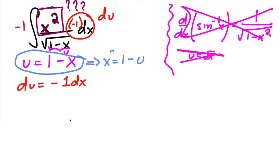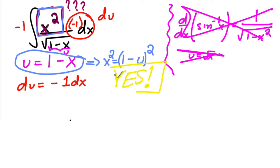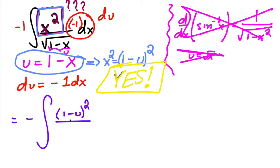If x = 1 − u, then x² = (1 − u)². We can substitute (1 − u)² in for x². So the integral becomes −∫(1 − u)²/√u du.